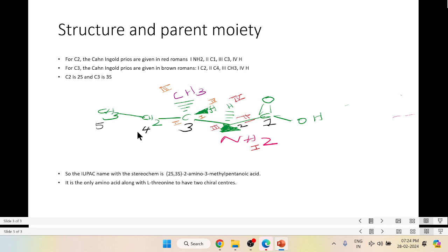So now this amino acid has got 2-S and 3-S, two chiral carbons. So that's what, it's an interesting aspect of isoleucine which leucine doesn't show. So the IUPAC name of isoleucine along with the stereochemistry is 2-S, 3-S, 2-amino, 3-methyl pentanoic acid.